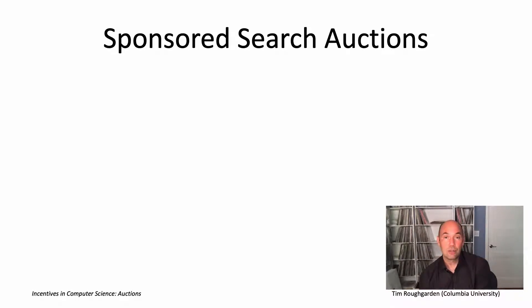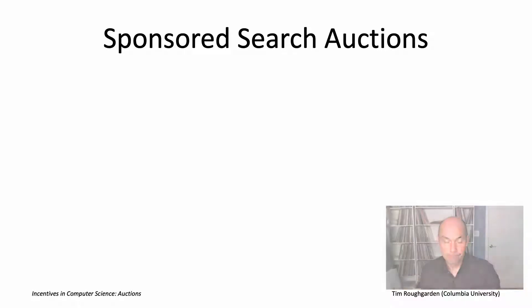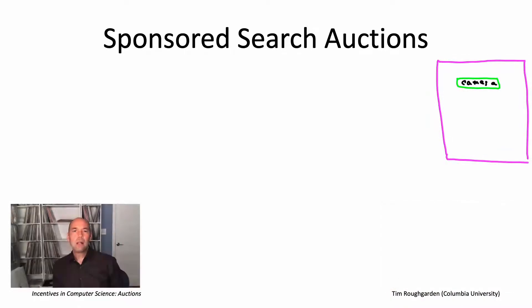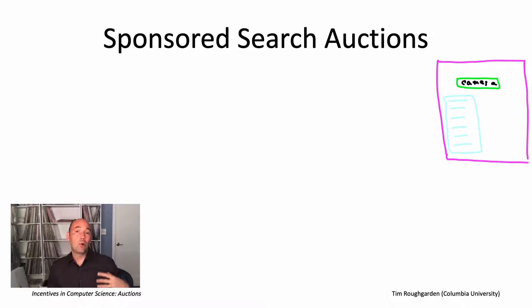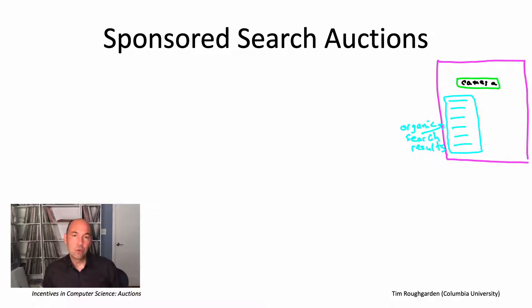So what is a sponsored search auction? Remember what it looks like when you type a query into a search engine — say you search for a keyword like "camera." The search engine gives you a bunch of links you can click on. There are actually two different types of links: organic links, which are pages deemed relevant to your query by the search engine's internal ranking algorithm (in Google's case, the PageRank algorithm), and then there are also sponsored links.